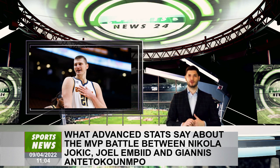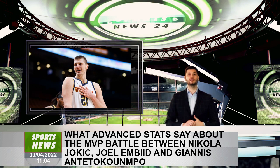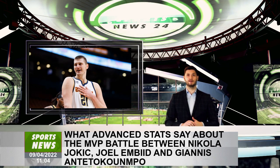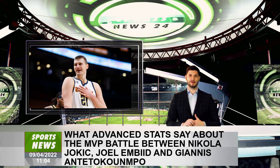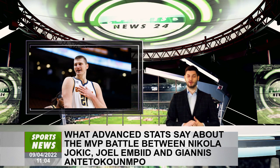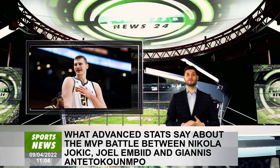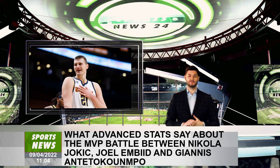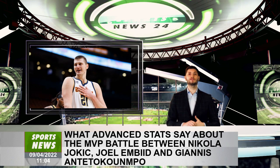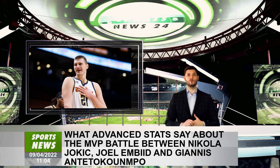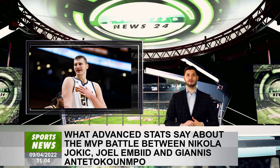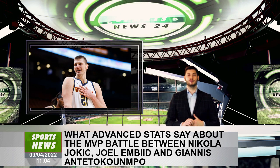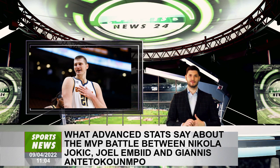The first way uses exclusively box score stats — player efficiency rating, win shares, box plus-minus, and my own wins above replacement player metric. The second uses adjusted plus-minus systems that don't incorporate any box score data, but only how a player's team performs with him on or off the court, adjusted for teammates and opponents. The third synthesizes both box score and plus-minus data — the combo metrics.